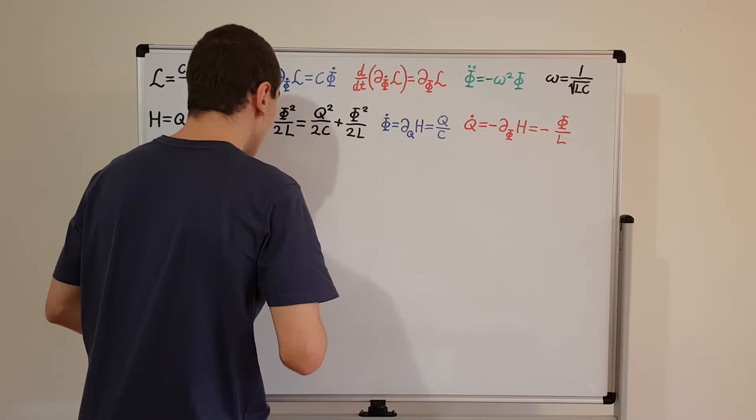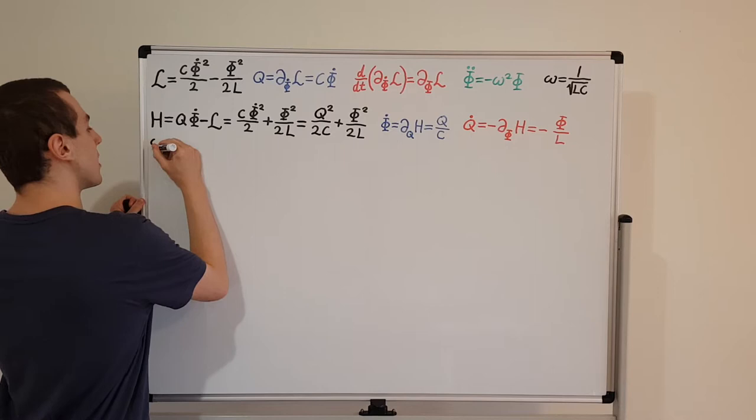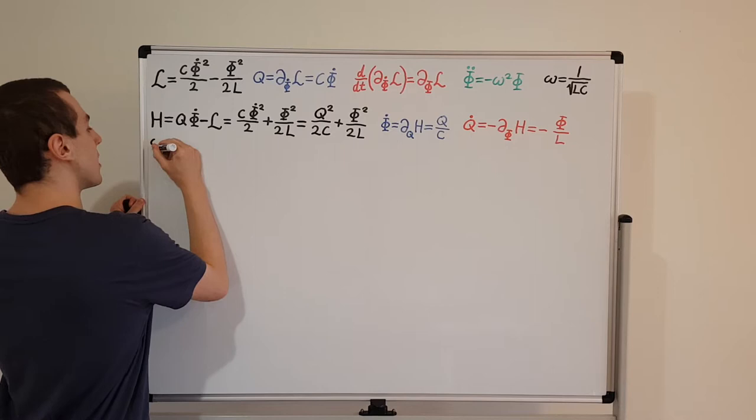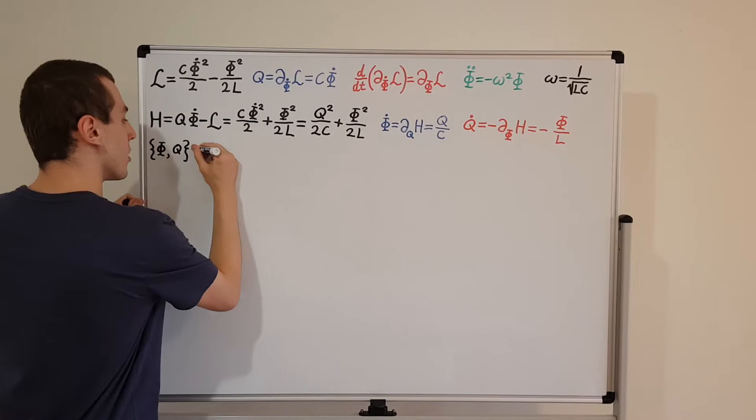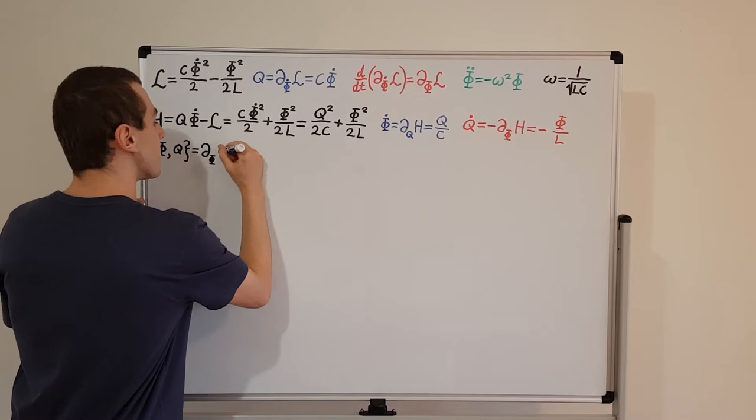Now I want to write the Poisson bracket — the Poisson bracket of phi with Q. This curvy bracket is going to denote the Poisson bracket. We have phi and then we have Q. Let me write out the definition of the Poisson bracket. First, we have to take a partial derivative with respect to phi of phi.